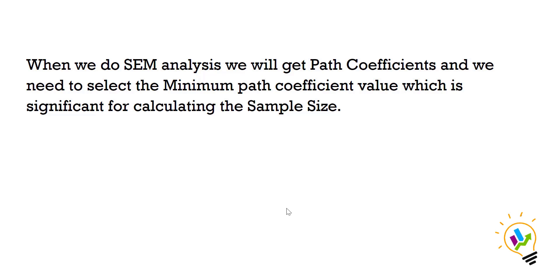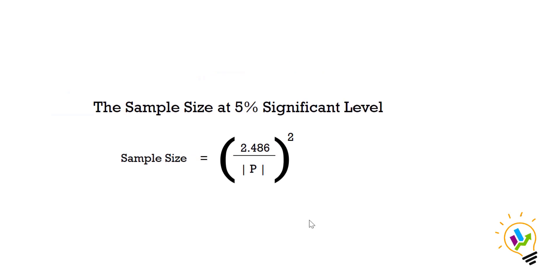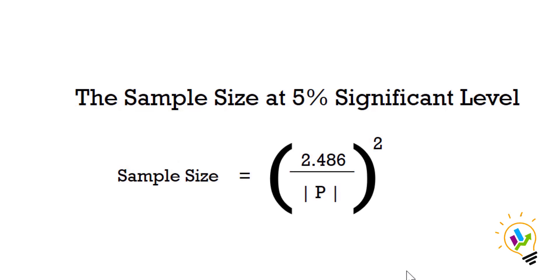When we do a SEM analysis, we will get the path coefficient and we need to select the minimum path coefficient value which is significant for calculating the sample size. When you are calculating sample size, we must see at what level of significance we are doing this. For example, if we are doing it at 5%...